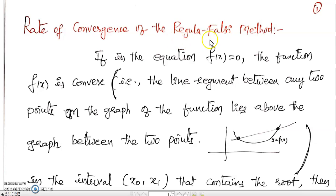Therefore, since we have to locate the interval at each iteration in the regular falsi method, one of the endpoints is fixed in the interval. This is a very important point. In the secant method, we apply the formula iteratively: x₀, x₁, x₂ and so on. But in the regular falsi method, at each iteration we have to locate the interval, meaning one of the endpoints is fixed.